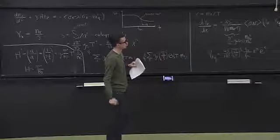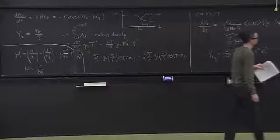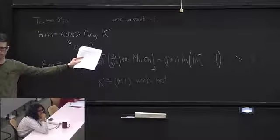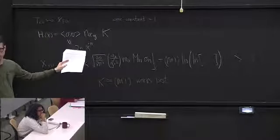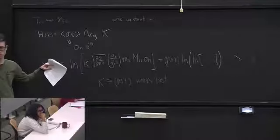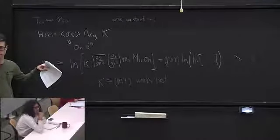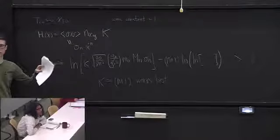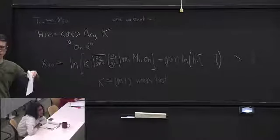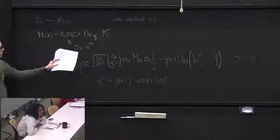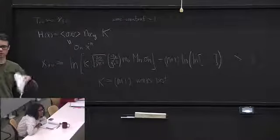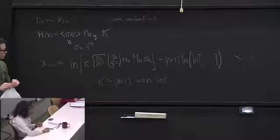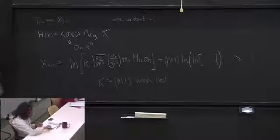A student asks whether there's a sum over n when expanding the cross section. In general there are multiple terms, but because x_f turns out to be pretty big, it's usually a good approximation to only keep the leading term. This approximation is specifically for the case where the cross section takes the single-power form; more generally you apply it to the dominant term. There could be a case with no s-wave but a p-wave, in which case n=1.